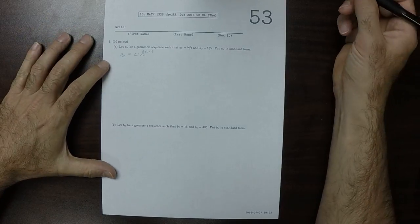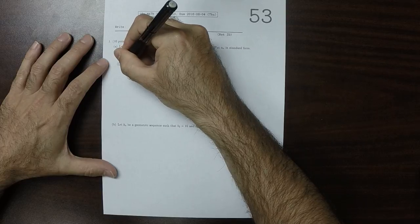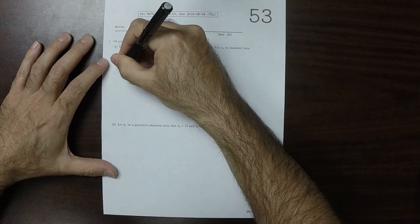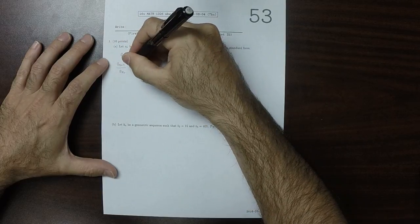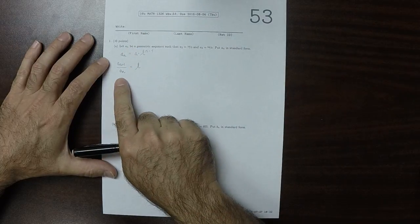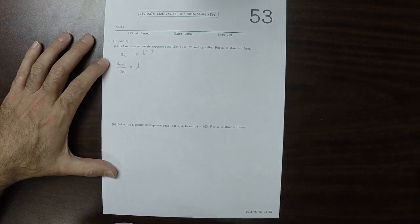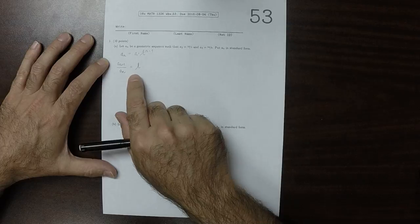So the things that we know is that a_(n+1) over a_n, well, that's r. That's why it's called a geometric series because the ratio of consecutive terms is this fixed value r.